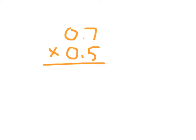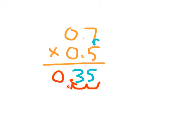Looking at the next problem, we have 0.7 times 0.5. We go ahead and multiply 5 times 7 to get 35. There are two decimal places within our problem, so there will be two decimal places within our answer. We start from the right and go 1 and 2 to place the decimal point. Our answer is 0.35, and we go ahead and place a 0 in front of it.